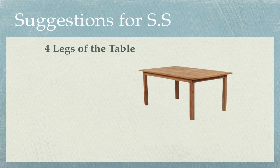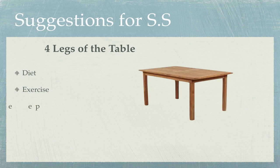One concept I use a lot to help find balance and figure out a program is this idea of four legs of a table. If you think about a table that's stable and balanced, it's supported by four legs. For our body to be balanced, it should also be supported by four legs: the first is diet, the second is exercise, the third is sleep, and the fourth is our stress level.